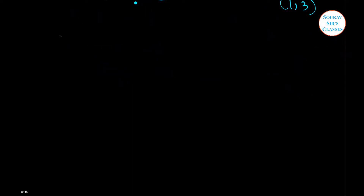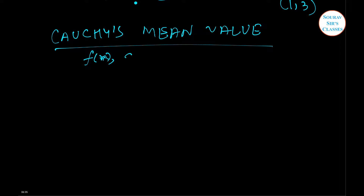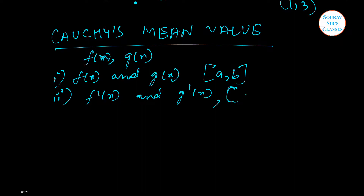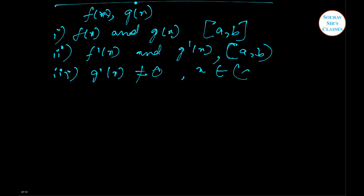Next we are going to do Cauchy's mean value theorem. Previously we dealt with a single function f(x); here we are going to deal with two functions f(x) and g(x). The first condition to be satisfied is that f(x) and g(x) must be continuous in the closed interval of a and b. The second condition is that f'(x) and g'(x) must exist in the open interval of a and b. The third condition is that g'(x) must not be equal to 0 for x belonging to the open interval of a and b.